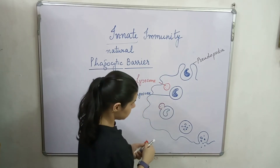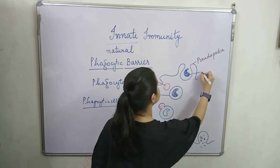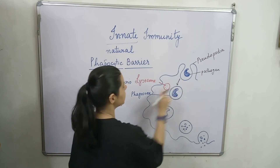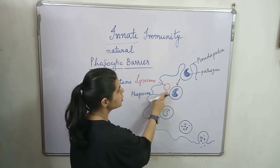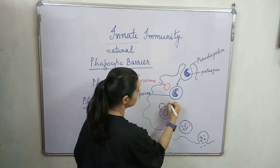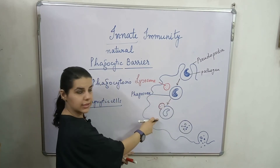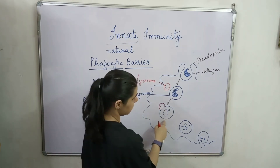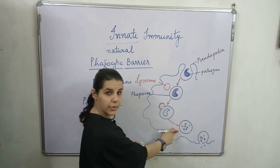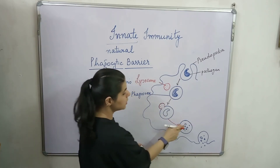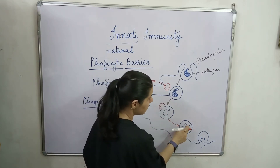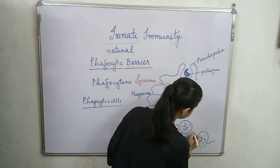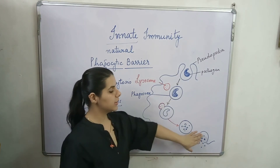So in this process, first the pathogen is engulfed, then there is formation of the phagosome. Next, the lysosome fuses with the phagosome. After fusion, the lytic enzymes of the lysosome will break down the pathogen. The pathogen has now been lysed and broken down, and the small breakdown products are released from the cell.